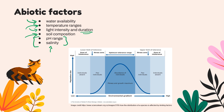Each of these abiotic factors can be graphed along an environmental gradient, from low to high — temperature, pH, whatever. There's going to be some optimum tolerance range where we find the most organisms, because that's the best place for that abiotic factor and most supportive of life. We find far fewer organisms in the stress zones because it's just not as easy to live there. And in zones of intolerance — literally intolerable — we're not going to find any organisms.